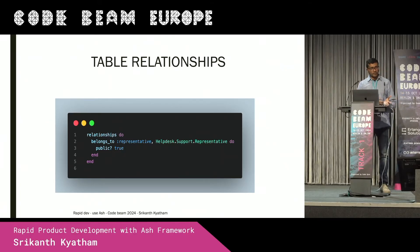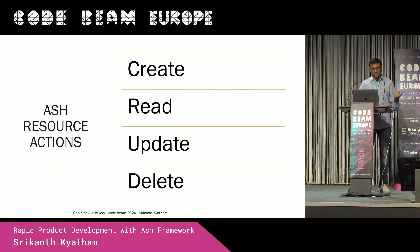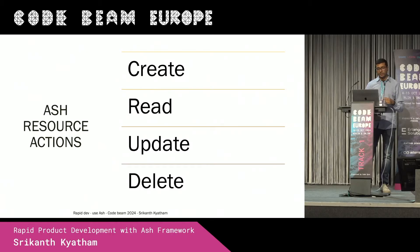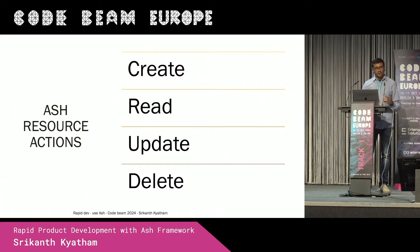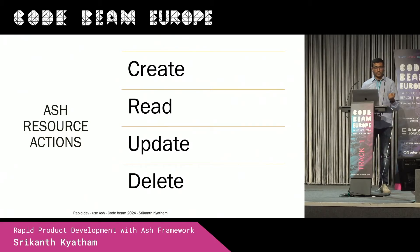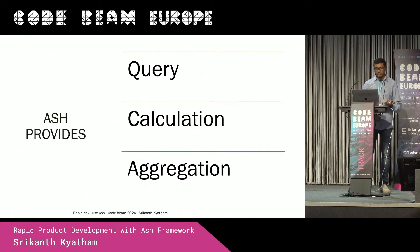Once you have written your attributes, the next step is to write your actions. Ash gives you specific blocks for create, update, and read. Defaults are defined, but you can extend how create, read, update, or delete works. If you don't like how Ash treats your actions, there are lifecycle hooks — before and after hooks — that you can hook into and fall back to Ecto if you want to make those queries. It doesn't stop you from doing that.